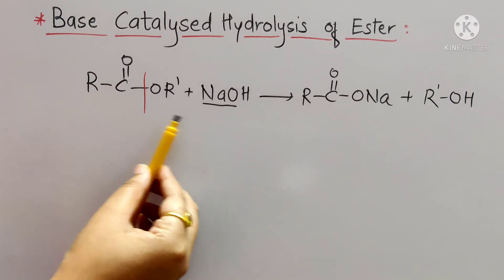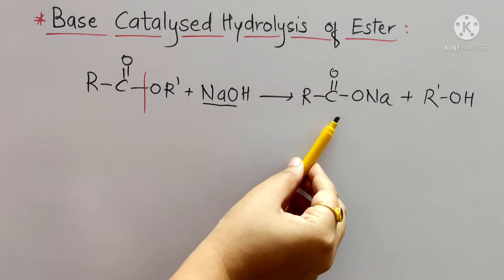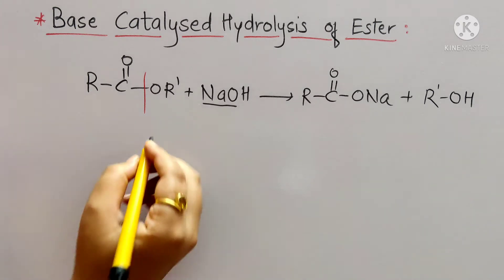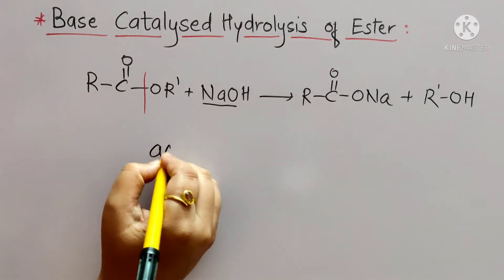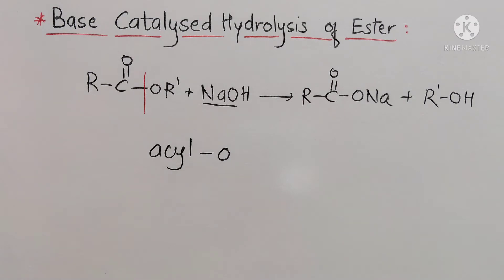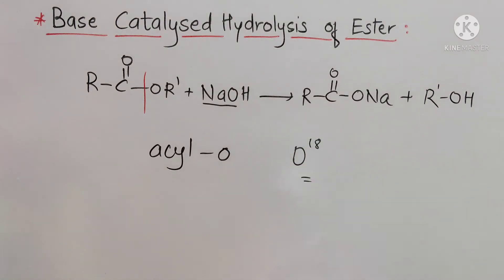The alkaline hydrolysis of ester produces the sodium salt of fatty acid, which is soap, and glycerol. We can establish that there is an acyl-oxygen bond fission, and it can be shown by tracer techniques using the oxygen-18 isotope.